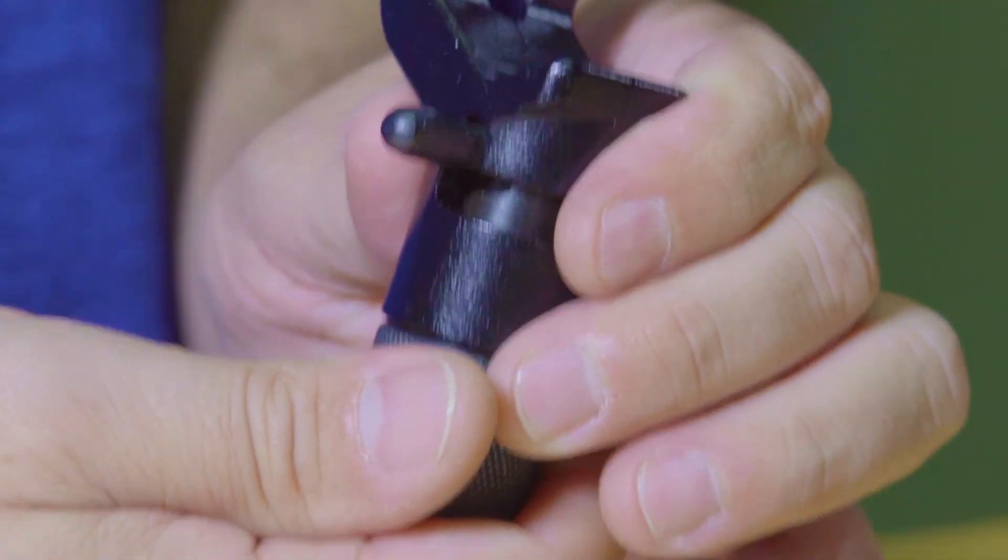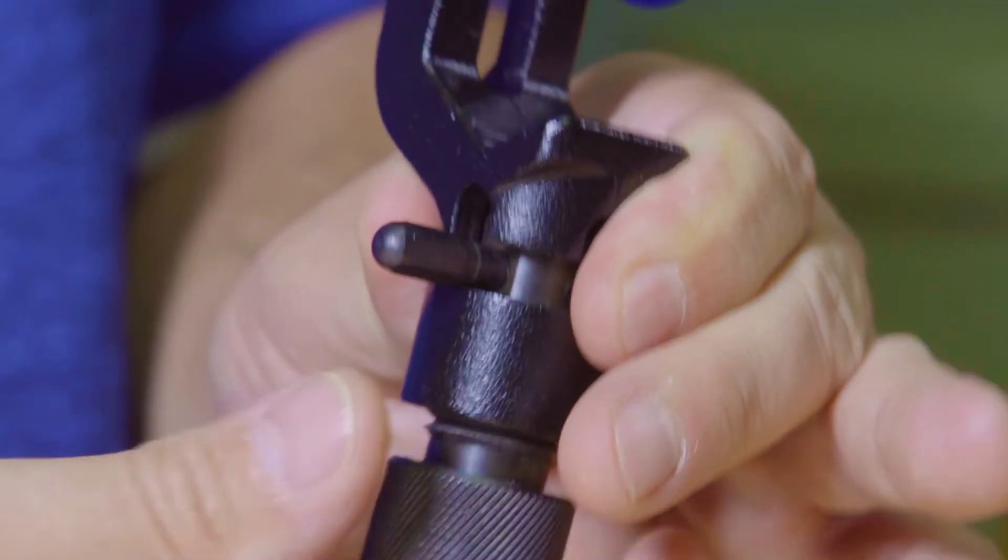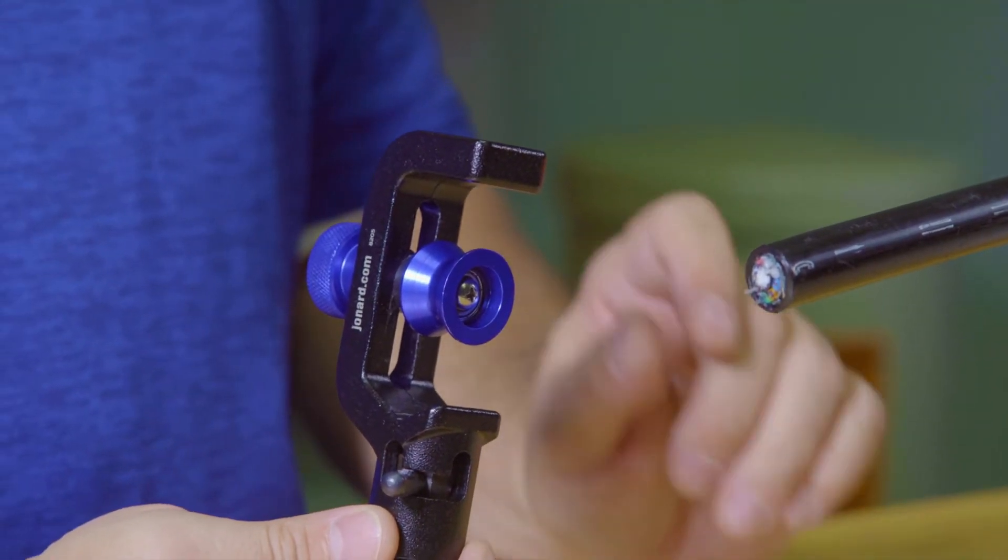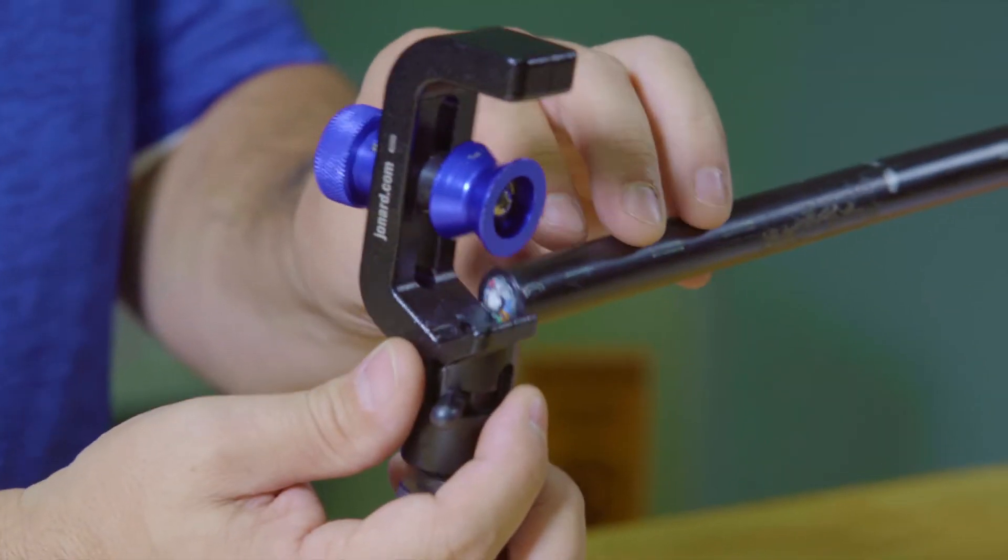Once the blade depth is set, retract the blade by loosening the black knurled knob. Now locate where the slit or ring operation is to be performed on the cable and place the cable into the tool.